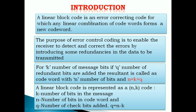A linear block code is an error correcting code for which any linear combination of code words forms a new code word. The purpose of error control coding is to enable the receiver to detect and correct errors by introducing extra bits known as redundant bits in the data to be transmitted. For k number of message bits, if q number of redundant bits are added, the resultant is known as the code word with n number of bits, where n is equal to k plus q.